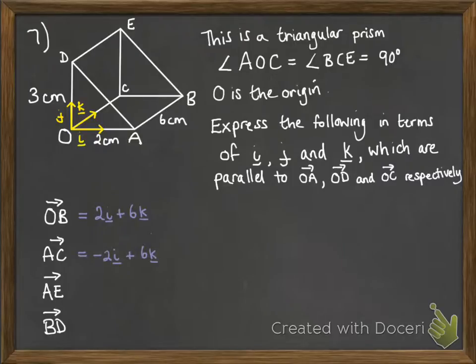Next for A to C, we're going to go minus two lots of I to get from A back to O. And then from there to C, it's another six K. A to E, we've got to go from A to O is minus two I. From O to D is plus three J. And then D to E is six K.